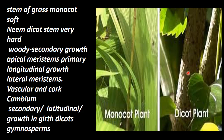Whereas lateral meristomes — the inner meristome, not apical but lateral — give rise to vascular cambium and cork cambium. Vascular cambium gives rise to secondary xylem and phloem. Cork cambium gives rise to cork and periderm. This secondary growth is latitudinal — increase in the girth of the plant. This happens in dicots and gymnosperms.